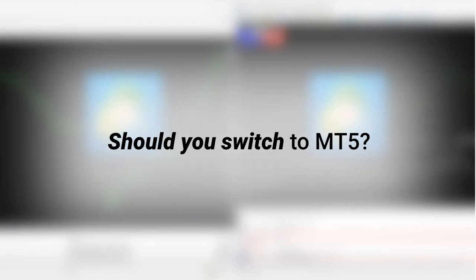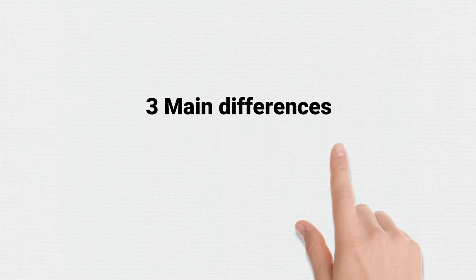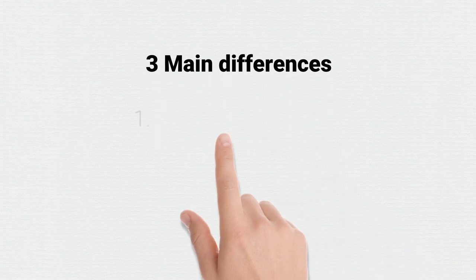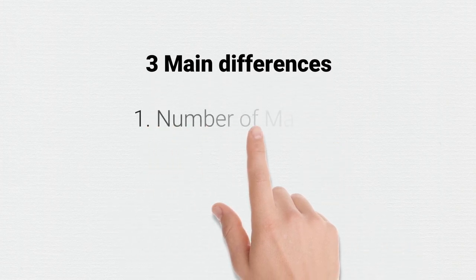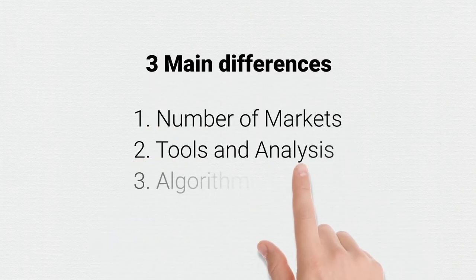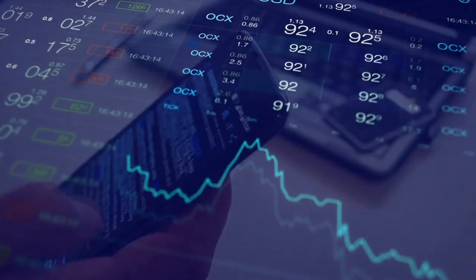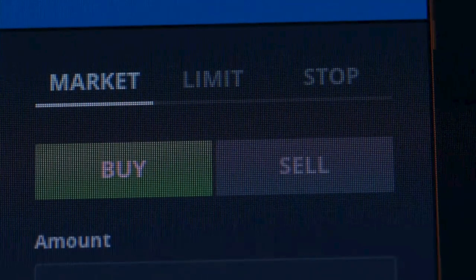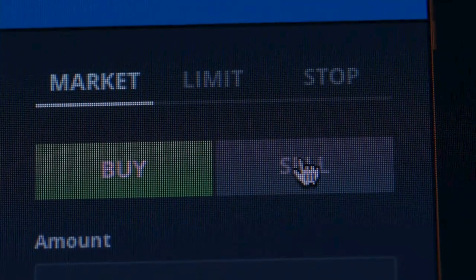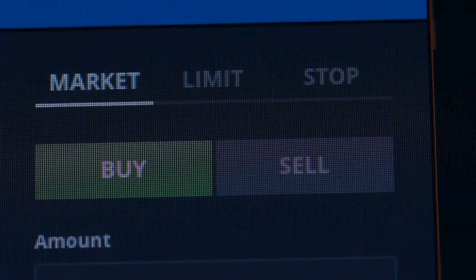There are three main differences between MetaTrader 4 and MetaTrader 5 – number of markets, tools for market analysis, and algorithmic trading. Today we are going to walk you through each core difference so you get a better understanding of which MetaTrader version is the right one for you. Stay tuned!